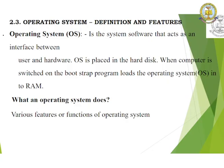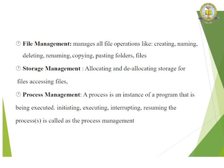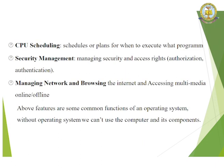Let's move on to operating systems and understand their features. An operating system is the system software that acts as an interface between the user and the hardware. The operating system is placed in the hard disk. When the computer is switched on, the bootstrap program loads the operating system into the RAM. Various features of the operating system include booting the computer, command interpretation, input-output management, file management, storage management, process management, CPU scheduling, security management, managing networks, and browsing the internet and accessing multimedia online and offline.